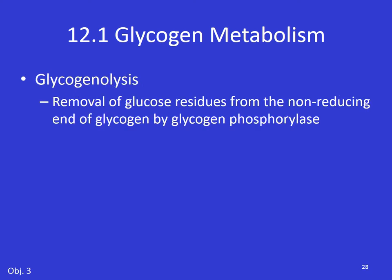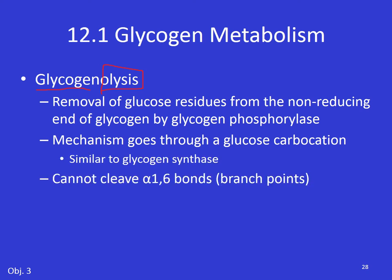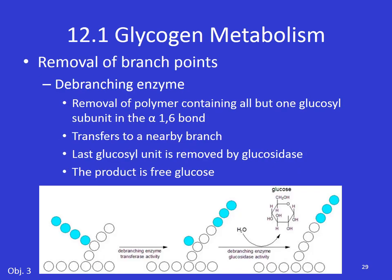Glycogenolysis — if you think back to your Greek, 'lysis' means to cut — so we're going to be breaking down glycogen. The removal of glucose residues from the non-reducing end of glycogen occurs by glycogen phosphorylase. Glycogen synthase makes glycogen; glycogen phosphorylase breaks down glycogen. The mechanism is basically glycogen synthase in reverse — it goes through a glucose carbocation — but it can't cleave alpha-1,6 bonds. So when breaking down glycogen we eat from the outside on those straight chains until we hit a branch point, and then we're stuck. Glycogen phosphorylase cannot eat through a branch point.